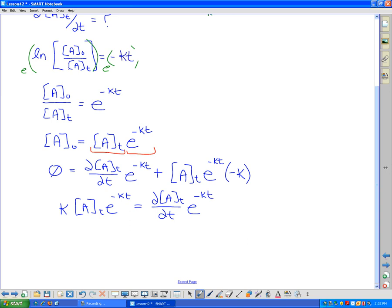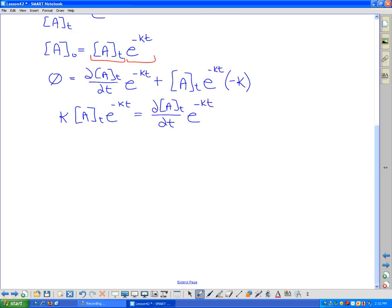So both sides have e to the negative kt, so those would cancel each other out in the end. And therefore, if you want to know the rate of changing your reaction, it's simply going to be the reaction constant multiplied by the concentration at any given point in time. So there we are.